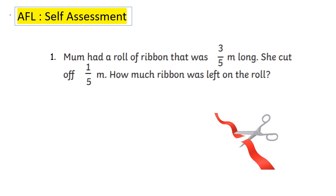Here is your AFL question. After completing the AFL, you can put a tick mark and write down SA. Your self-assessment has to be done. Mom had a roll of ribbon that was 3/5 meter long. She cut off 1/5 meter. How much ribbon was left on the roll?